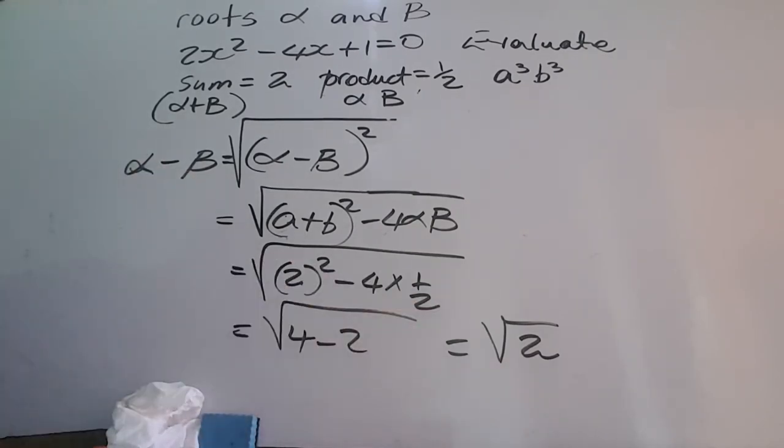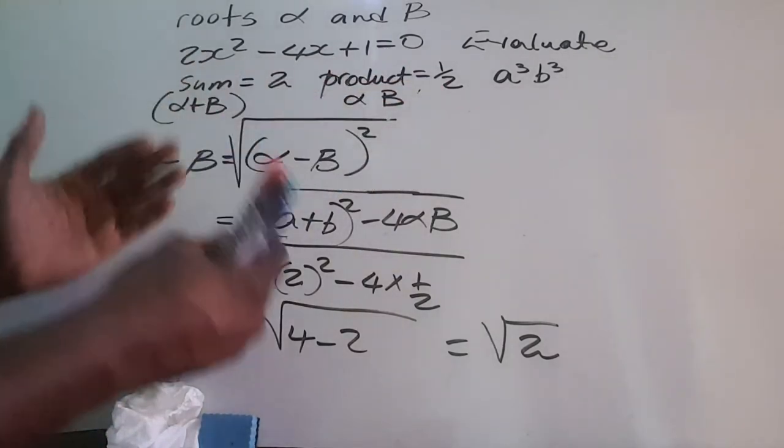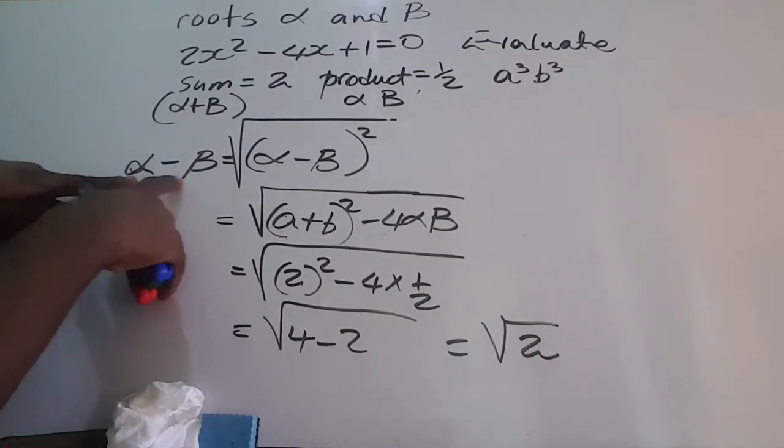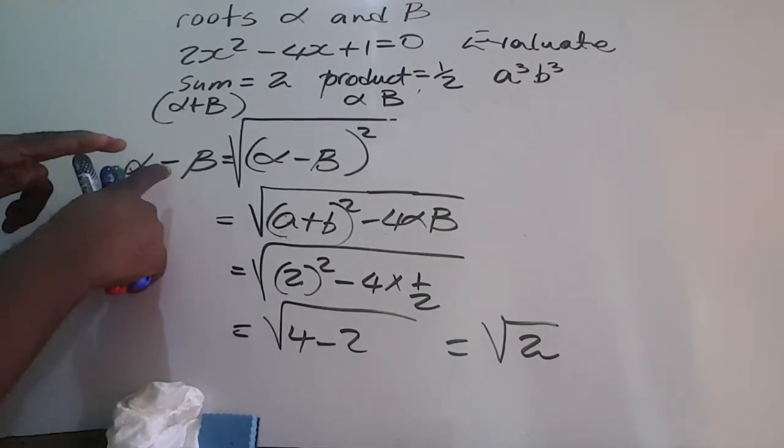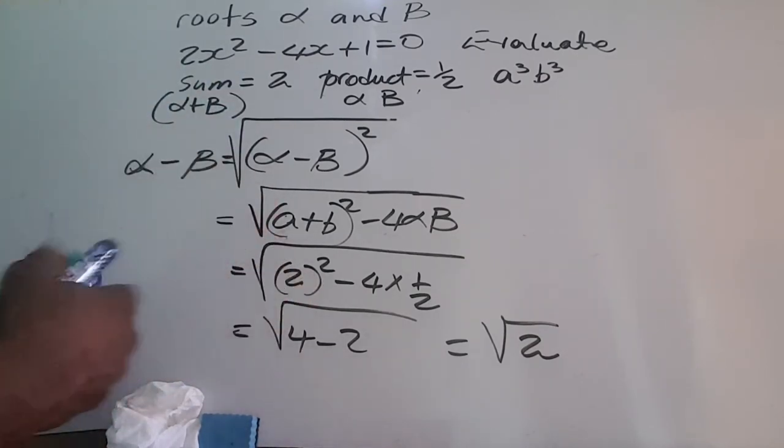I hope those were helpful and you understood that whenever you get these problems where we have the roots, all we have to do is take our time, find the sum first, find the product, and then try to express the ideas given in alpha and beta as sums and products. Then we do a simple substitution. Thank you for watching, subscribe.